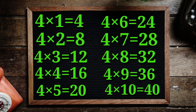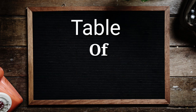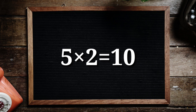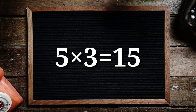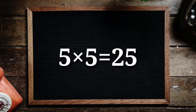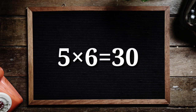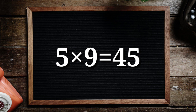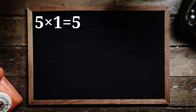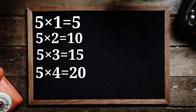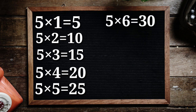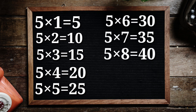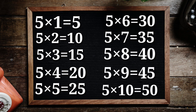Table of 5: 5 1's are 5, 5 2's are 10, 5 3's are 15, 5 4's are 20, 5 5's are 25, 5 6's are 30, 5 7's are 35, 5 8's are 40, 5 9's are 45, 5 10's are 50.